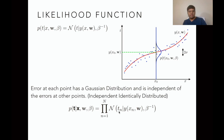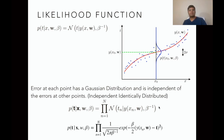So tn is the target output for the nth point given the nth input, and the weight vector remains the same for all points. The likelihood function is defined as the product of the individual distributions of the error function. If you plug in the Gaussian distribution, you get this expression.